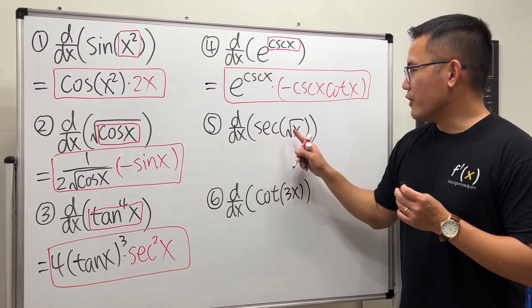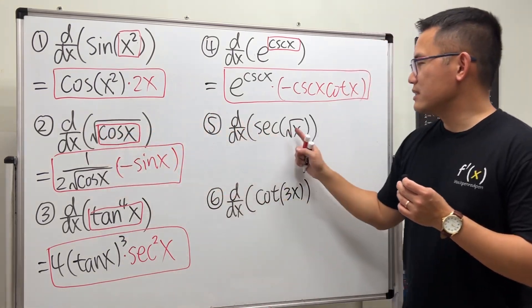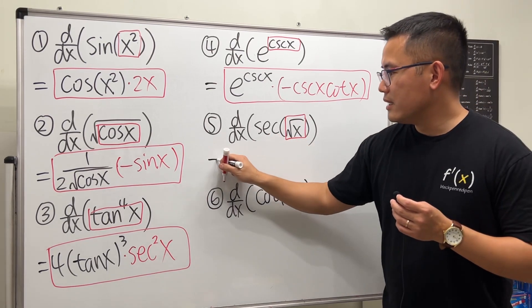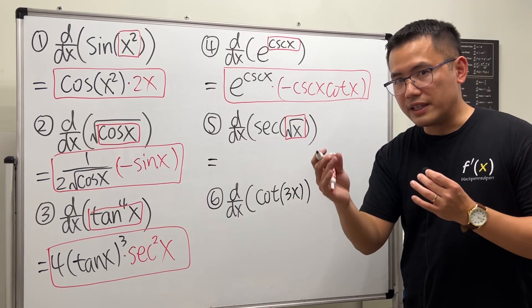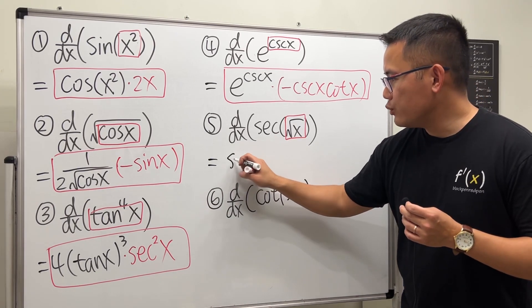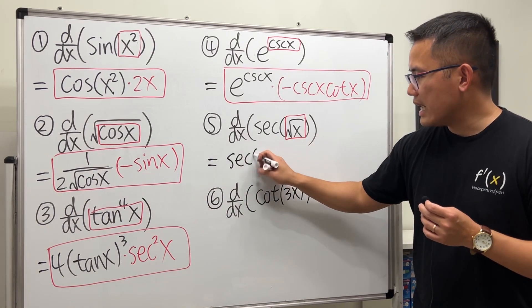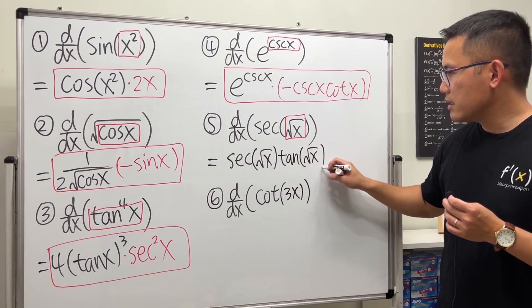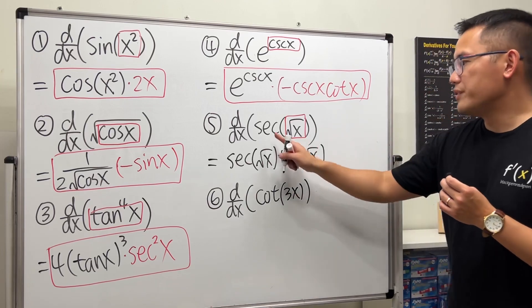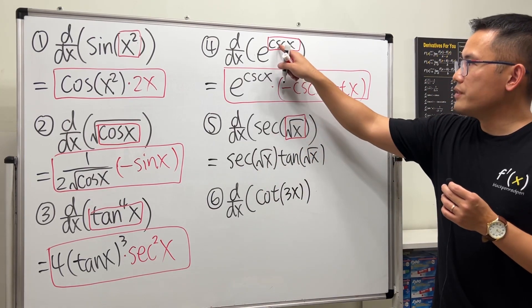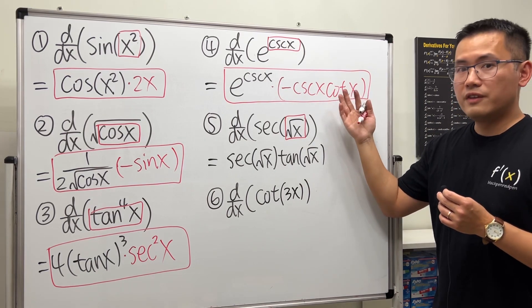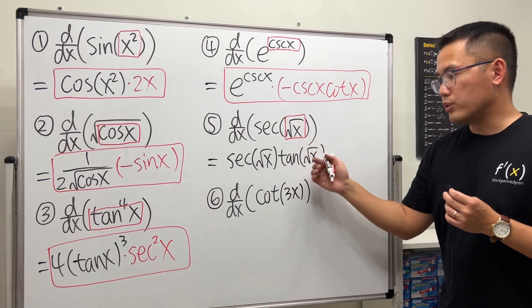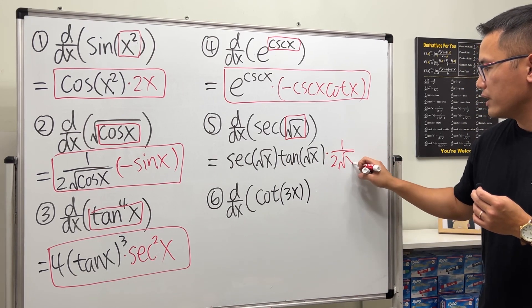Next we have secant of square root of x. This time the square root is the inside function, so we first differentiate secant. The derivative of secant is secant of the inside times tangent of the inside — secant repeats and its best friend tangent appears. Then we multiply by the derivative of the square root, which is 1 over 2 square root of x. Note: the derivative of cosecant is cosecant times cotangent — very similar, but with a negative because it's a co-function.